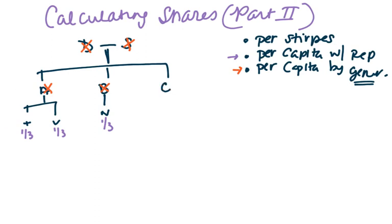To see the difference between per capita with representation and per capita by generation, we have to change the hypothetical a little bit. In this version, B has died without a surviving spouse, and A and B have pre-deceased B, but C is still alive.